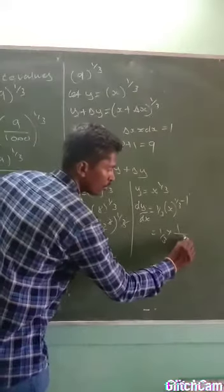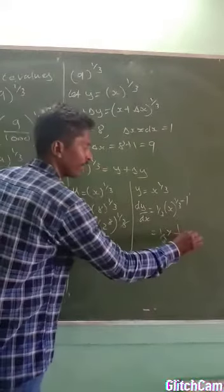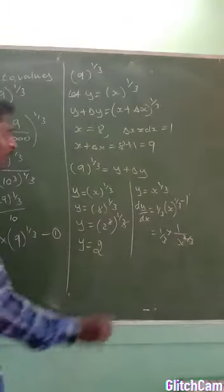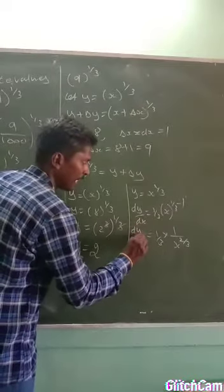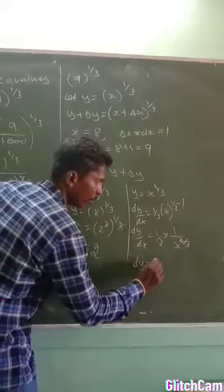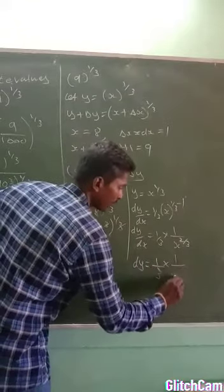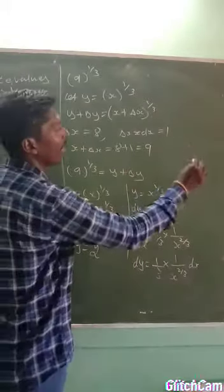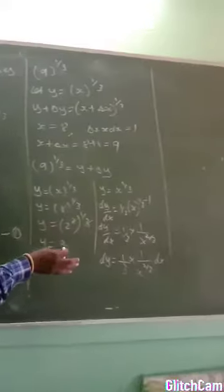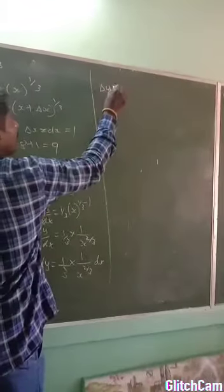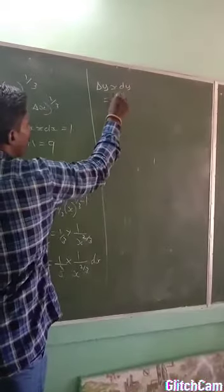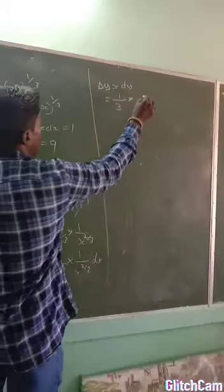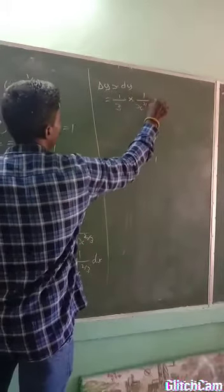So dy/dx = (1/3) · x^(-2/3), which means the denominator becomes x^(2/3). Multiplying both sides by dx, we get dy = (1/3) · (1/x^(2/3)) · dx.